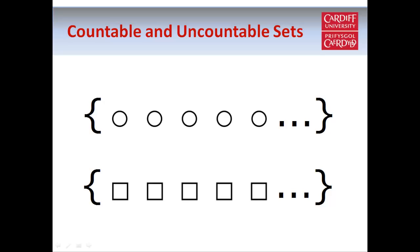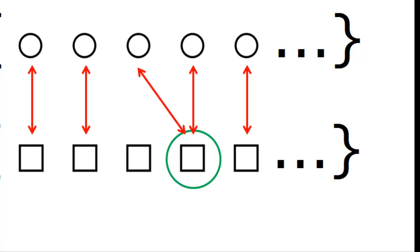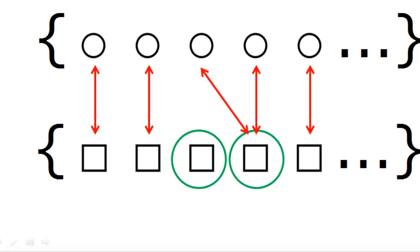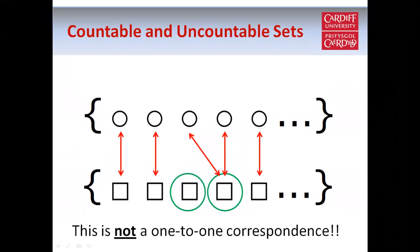So just to emphasize the point, let's say we have two sets of objects and we try to match them up like this. This is not a one-to-one correspondence, for two reasons. First, this element here, circled in green, is linked to two elements from the top set. And the element next to it isn't linked to any elements from the top set at all. So this is definitely not a one-to-one correspondence.